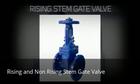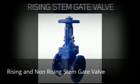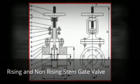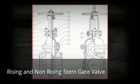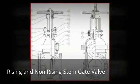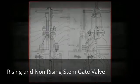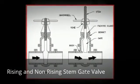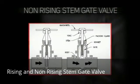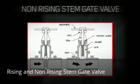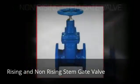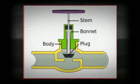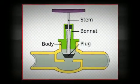Gate valves are characterized as having either a rising or non-rising stem. Rising stems provide a visual indication of valve position because the stem is attached to the gate such that the gate and stem rise and lower together as the valve is operated. Non-rising stem valves may have a pointer threaded onto the upper end of the stem to indicate valve position, since the gate travels up or down the stem on the threads without raising or lowering the stem. Non-rising stems are used underground or where bonnets provide leak-proof closure for the valve body.